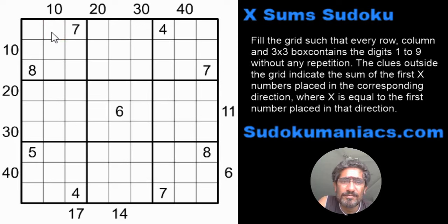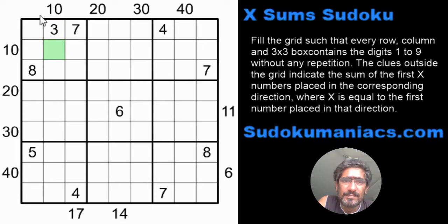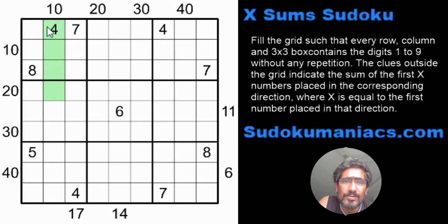To elaborate: if the first cell contained a 3, then the first 3 cells in that direction will add up to the number shown outside. But if the first cell was a 4, then the first 4 digits in that direction will add up to that outside number. Each number specifies from that specific direction.